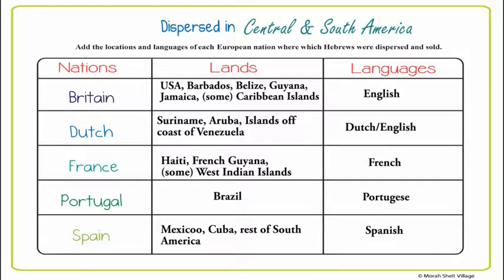Third, we have France, so that is going to be Haiti, French Guiana, and some West Indian islands. I didn't write every single one or I wouldn't have enough space in the box, but we do study them individually as we are learning about this history. And obviously the languages spoken there are French and Creole.